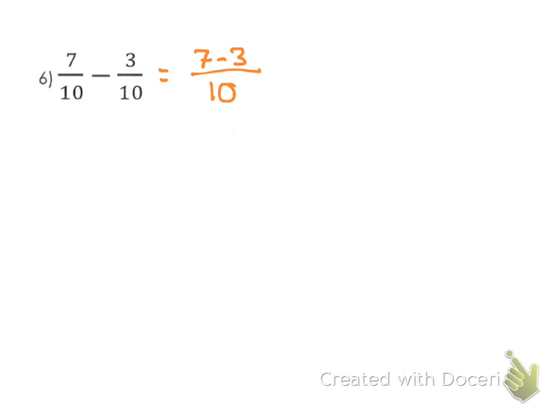So we take 7 and we subtract 3 and we get 4 over 10. Now a lot of you are going to want to stop there, but you shouldn't because those are even numbers, which means they're both divisible by 2. So we've got to do a little simplification after the fact.